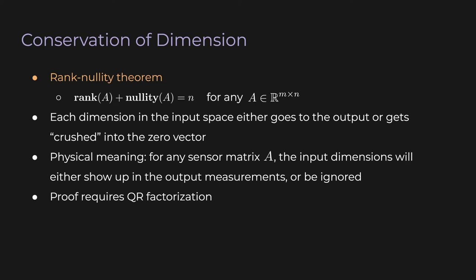If the matrix A represents some sort of sensor, we can ascribe a physical meaning to this: each input dimension that goes into the sensor will either show up in the sensor's measurements, or the sensor will ignore that dimension. The proof of the Rank-Nullity Theorem also requires QR factorization, so we'll come back to this later. I just want to pause to appreciate how nicely everything came together — range, rank, null space, and nullity are all tied together in this clean, simple formula that holds true for any matrix.